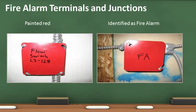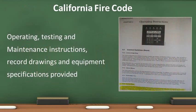All fire alarm junction box covers are required to be painted red and identified. Operating, testing, and maintenance instructions for fire alarm panels are required to be provided to the owner and kept on site, preferably inside the fire alarm panel. A full set of building and fire alarm approved and stamped plans should be on site for all buildings.